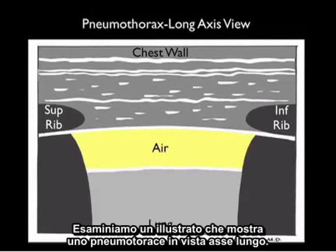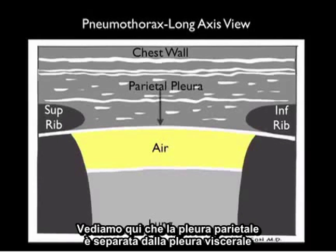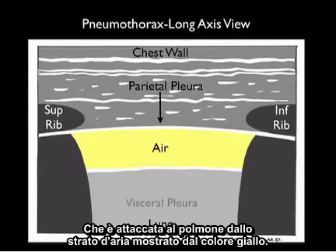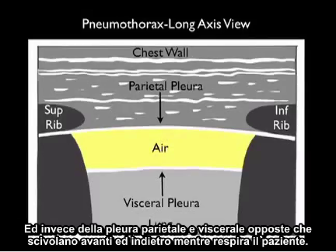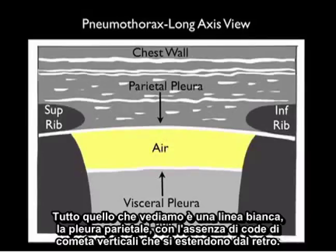Now that we understand what a normal lung looks like on bedside examination, let's take a look at a pictorial showing a pneumothorax in a long axis view. We see that the parietal pleura is now split from the visceral pleura, which is attached to the lung, by a layer of air. It's the splitting of the parietal and visceral pleura that causes a lack of lung sliding. Instead of the opposed pleural layers sliding back and forth as the patient breathes, all we see is a single line — the parietal pleura — with a lack of vertical comet tails coming off the back.